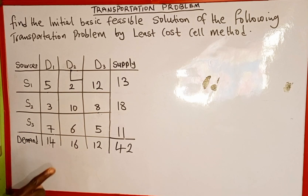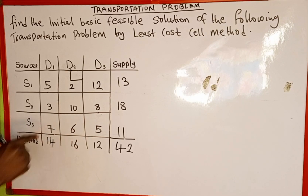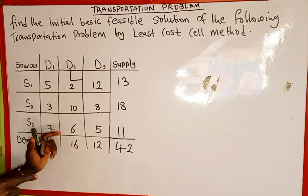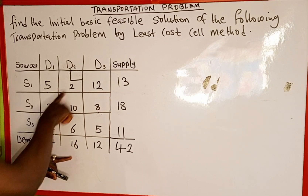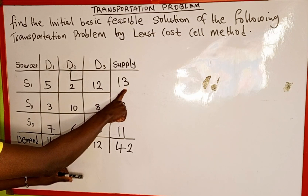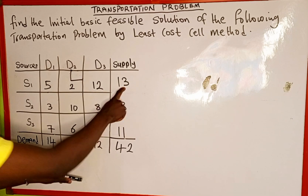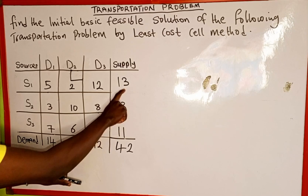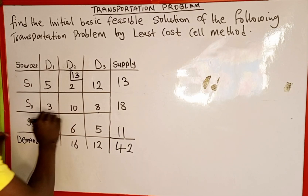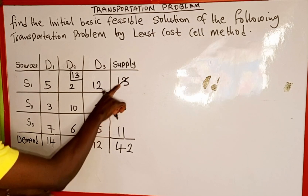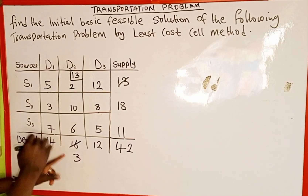We compare the supply and demand corresponding to this cell. The cell with value 2 corresponds to a supply of 13 and a demand of 16. The minimum is 13, so we allocate 13 here. We cancel the supply of 13, and 16 minus 13 leaves a remaining demand of 3. We then cancel row 1 since the entire supply of 13 has been used.